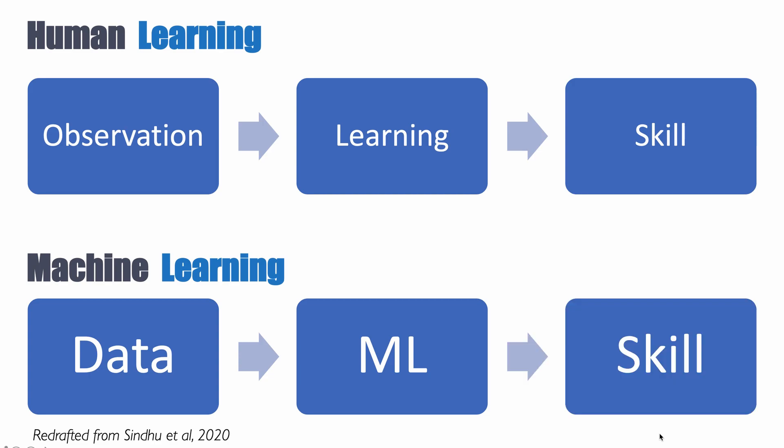The machine or the algorithm acquires a skill. We hope that this skill will be a predictive skill. So one way to define machine learning is to say that we program an algorithm with data rather than explicitly programming it with rules. And that really is the fundamental of machine learning.